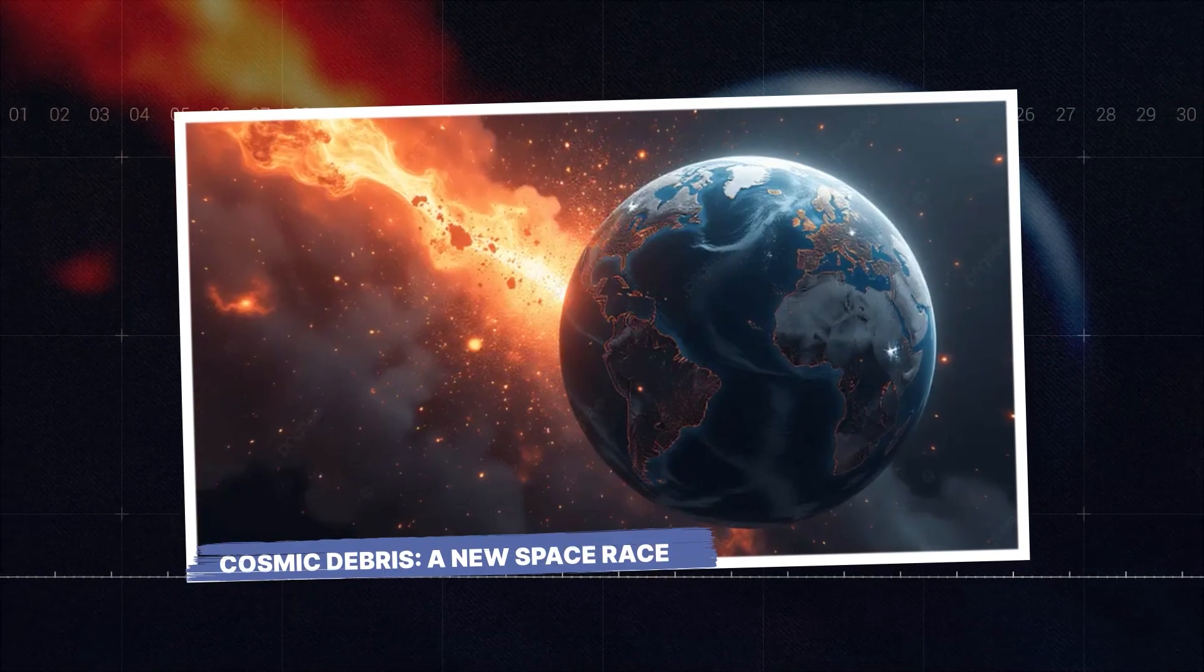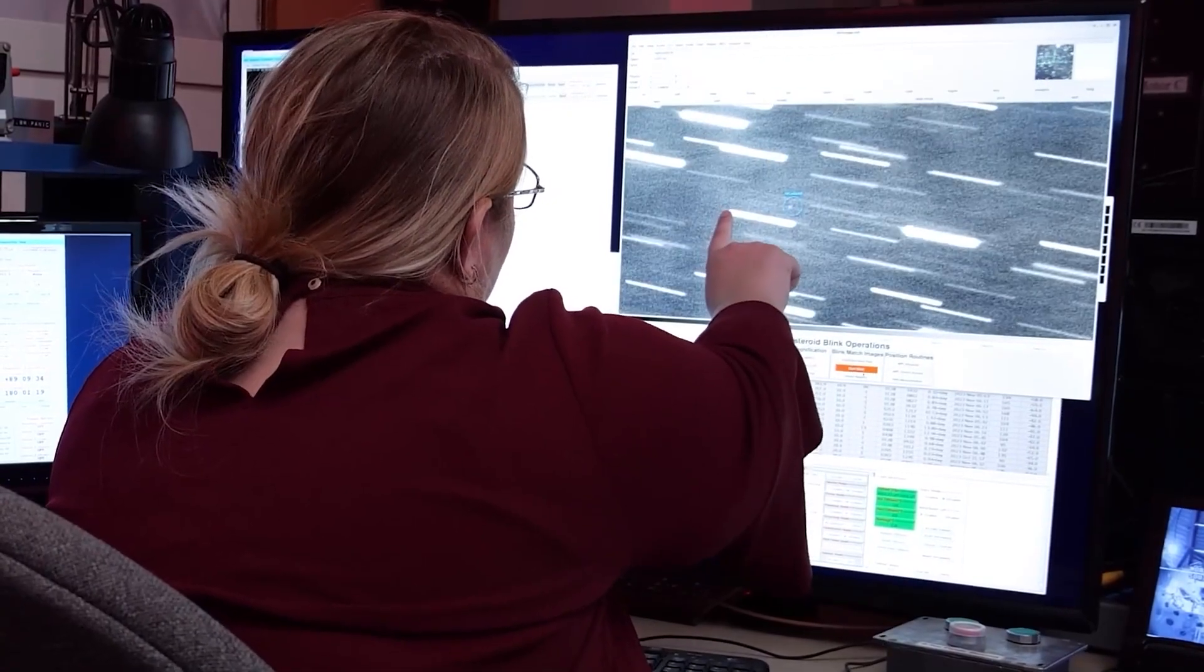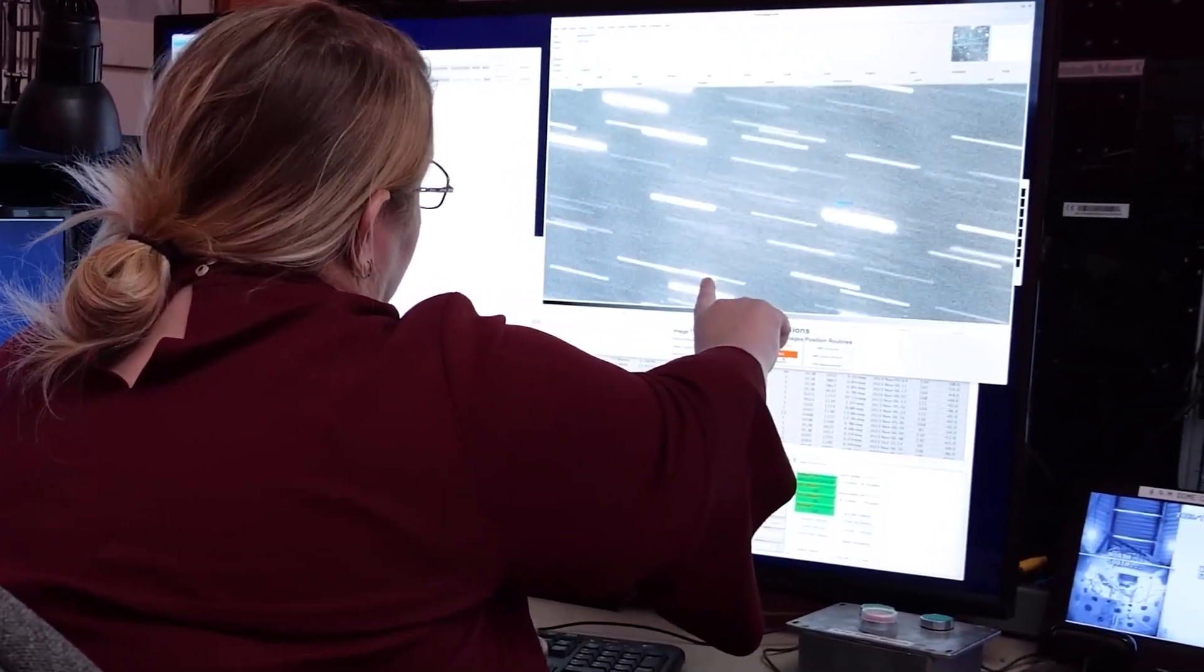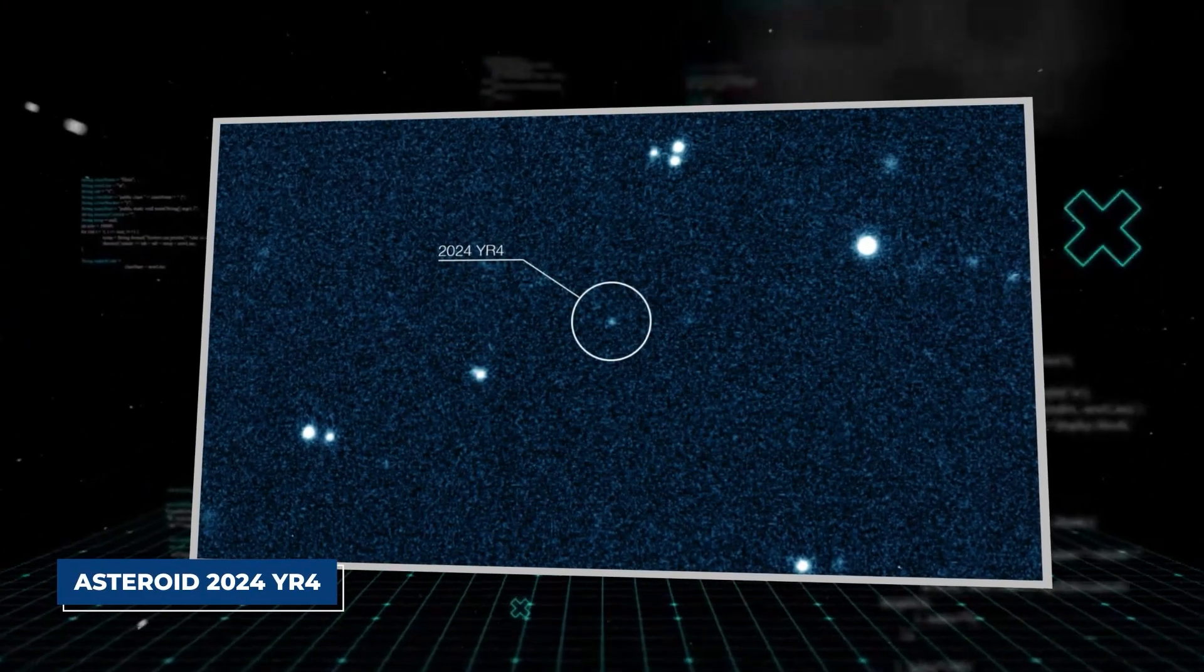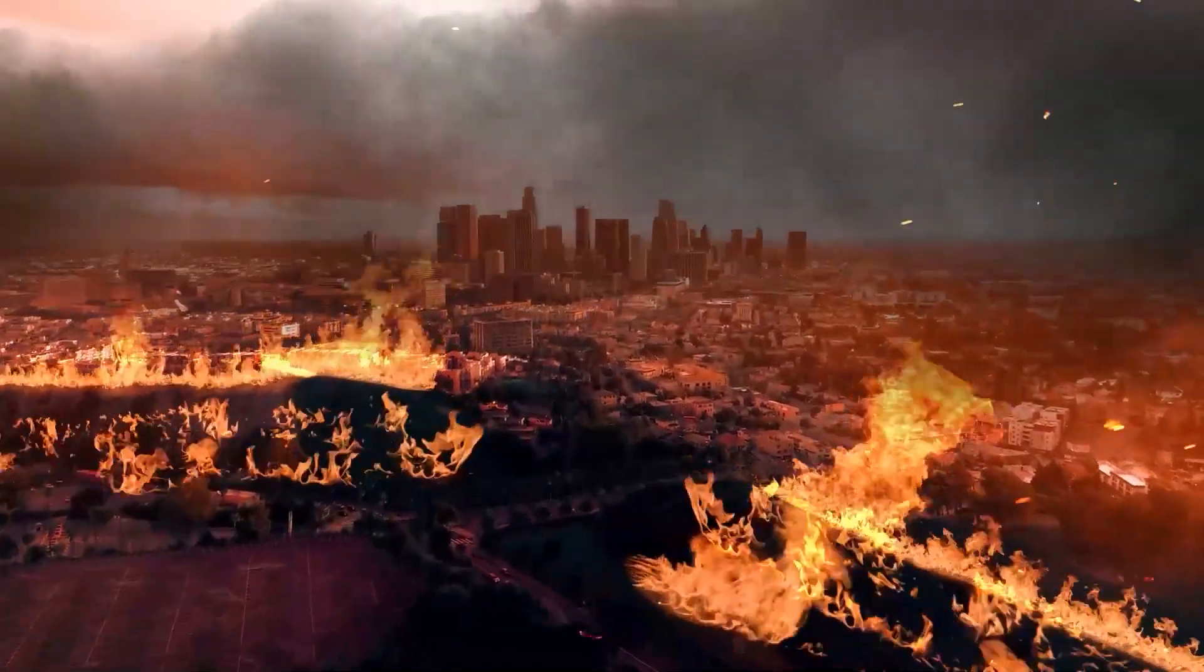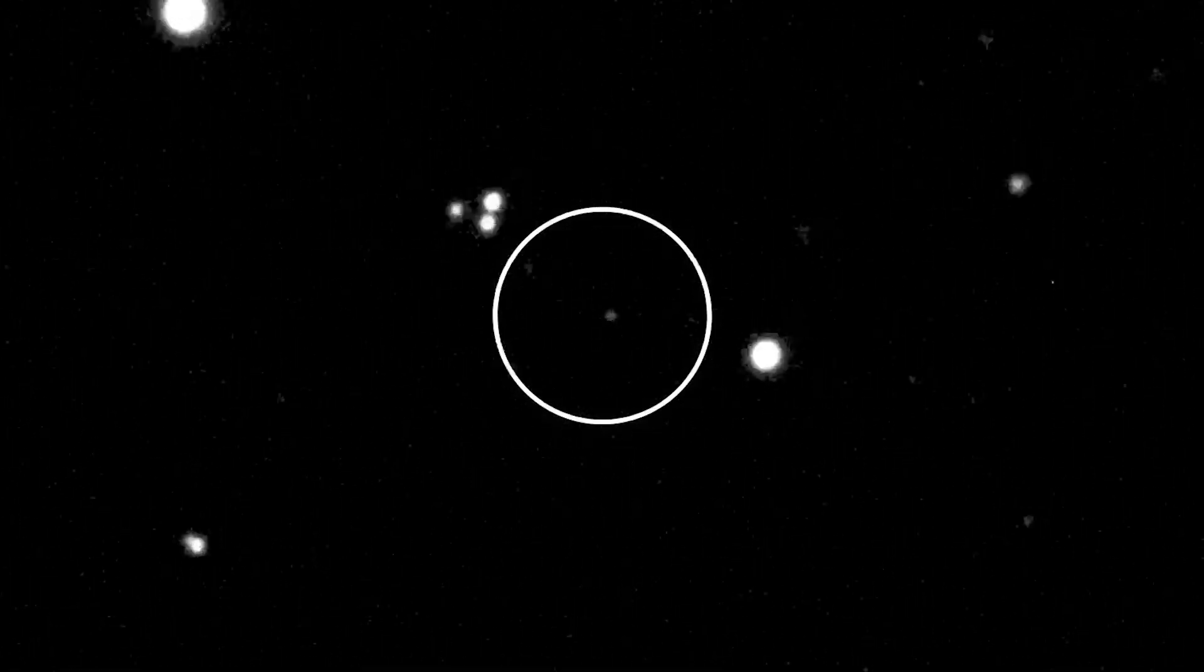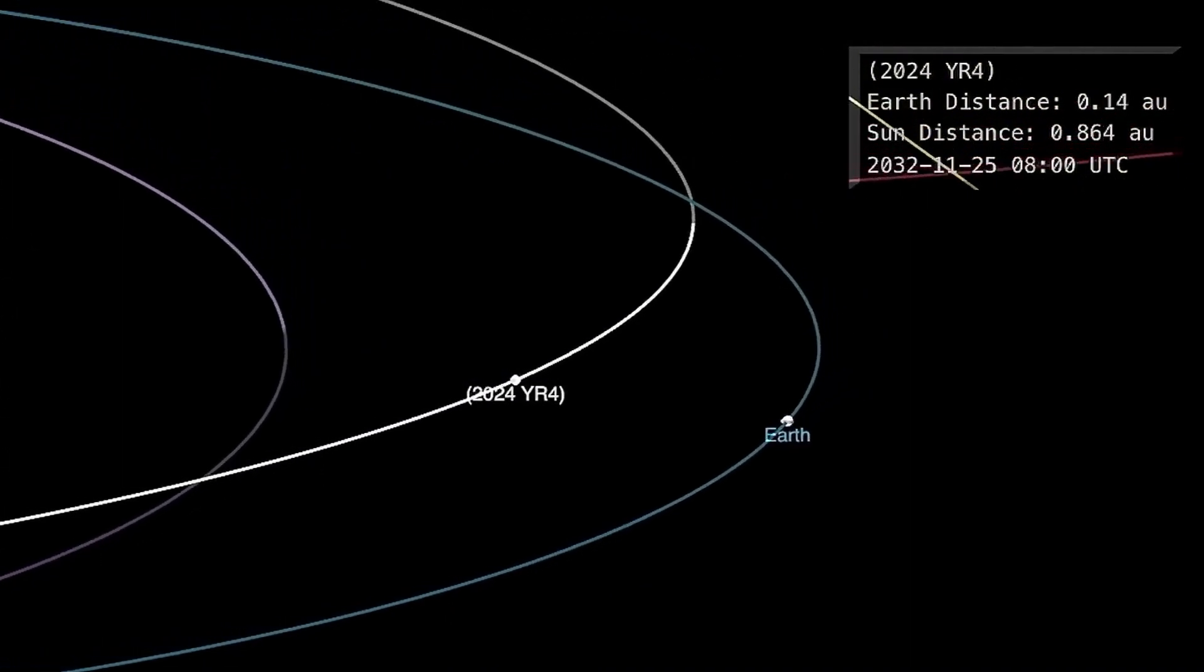Cosmic debris, a new space race. While Comet 3i Atlas dances away, a new kind of rocky terror has captured the attention of planetary defenders. Asteroid 2024 YR-4. This isn't just any space rock, it's a city game over asteroid, roughly 210 feet across, and it's on a path that could make history in a way no one wants.